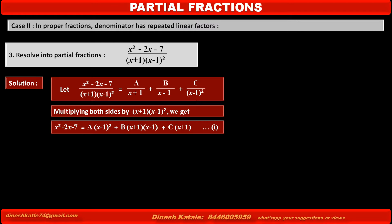Now we have to find the values of A, B, and C. To find the value of A, we cancel the terms of B and C by making their common factor (x+1) equal to zero. Therefore, putting x = -1 in equation 1.